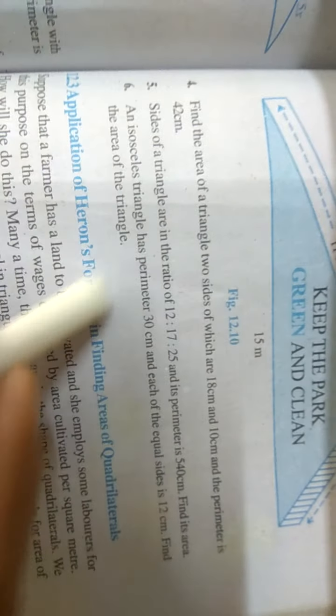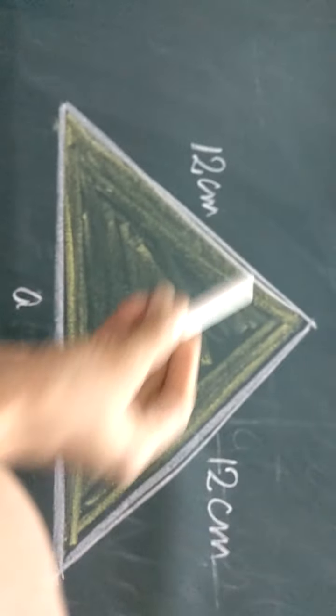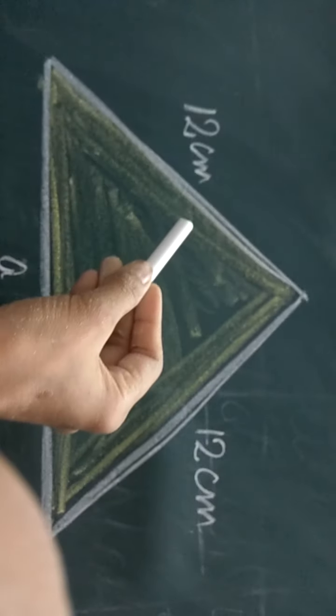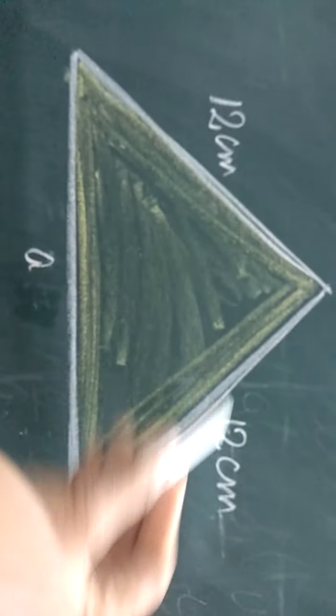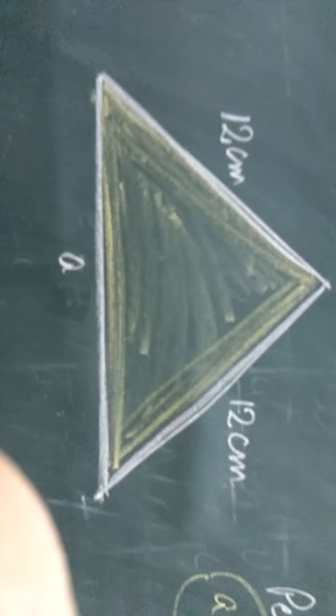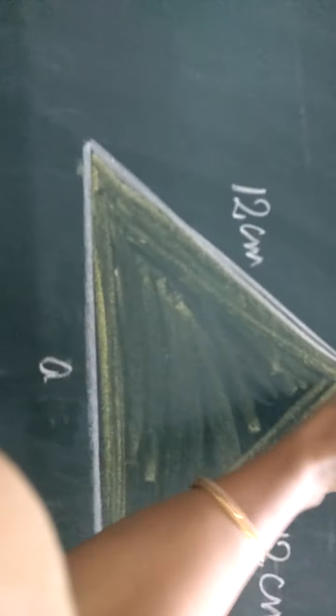Find the area of the triangle. Now dear students, if it is an isosceles triangle, that means its two sides are equal. It is given in the question that each of the equal sides is 12 cm, and we have to find out the area of triangle ABC.